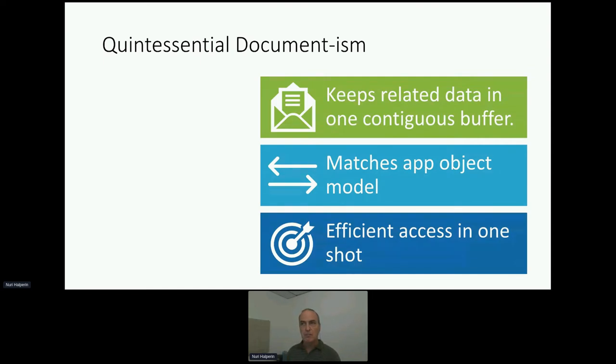That one document matches, hopefully, your programming paradigm. Namely, if you have a POJO, a POCO, if you're in Java, C, C-sharp, what have you, you will be able to map directly the values from your in-memory object to the document itself. So there's less translation and less manipulation of things in order to represent the data. Less friction in storing it, less friction in translating it, less mechanics is faster. And it's efficient for access in one shot.